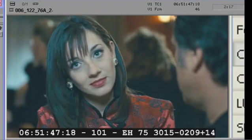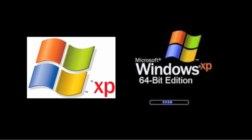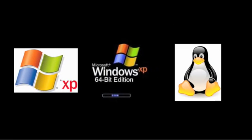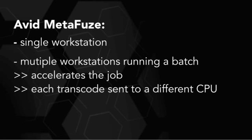Metafuse is supported under Windows XP, 32-bit and 64-bit, as well as on Linux under a compatibility layer for running Windows programs known as Wine, W-I-N-E. Avid Metafuse can be used on a single machine or across several machines in a batch process, which accelerates the job by sending each transcode to an additional CPU.